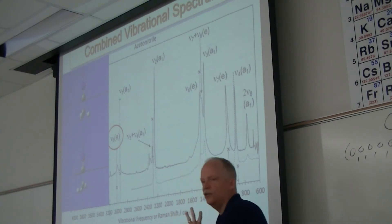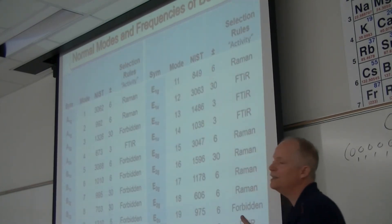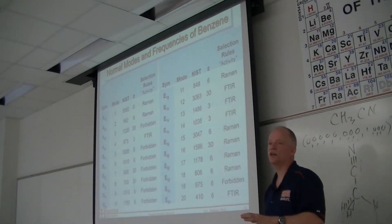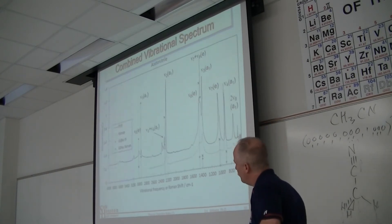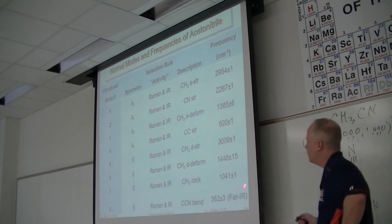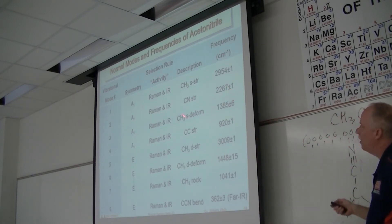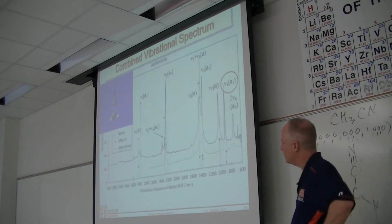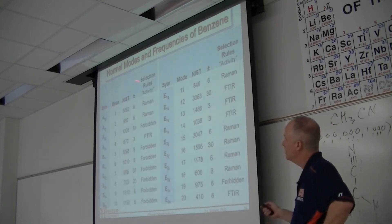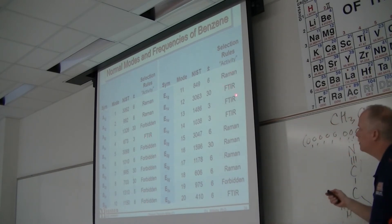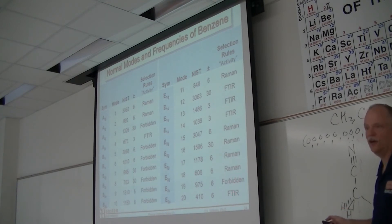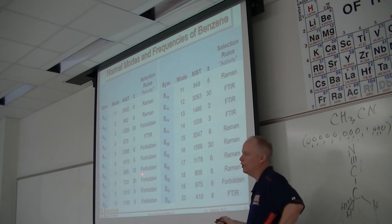Here's benzene — a D6H molecule, supersymmetric. Notice the selection rules for activity: some modes are Raman active, some are FTIR active, and some are forbidden — certain vibrations in the molecule just won't interact with light. They don't substantially change the electron cloud, they don't create a dipole moment, and so they're transparent. They just don't absorb. You really can't measure them directly with light.